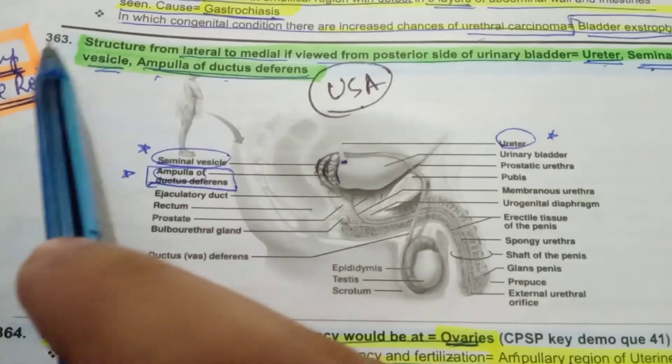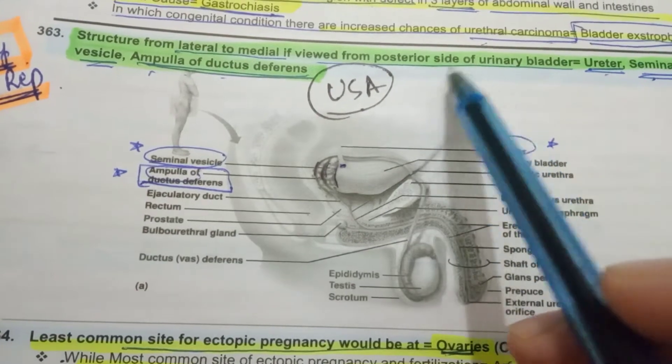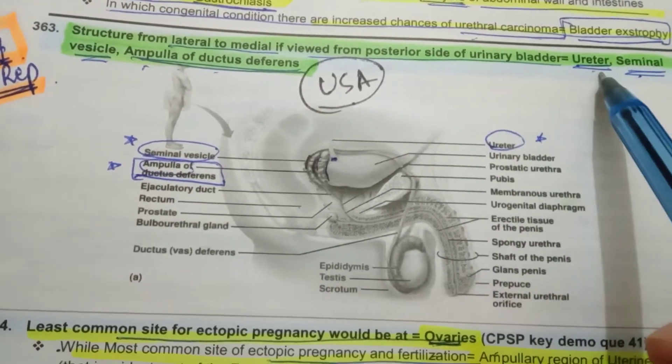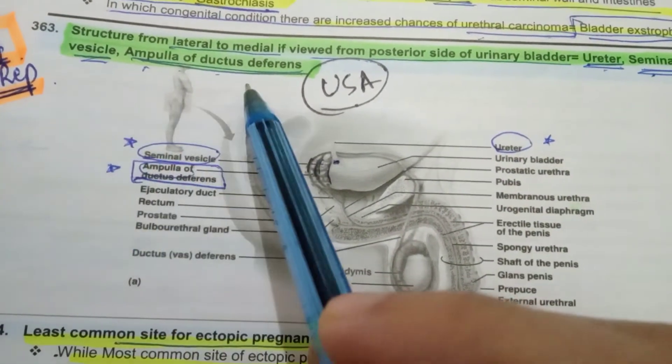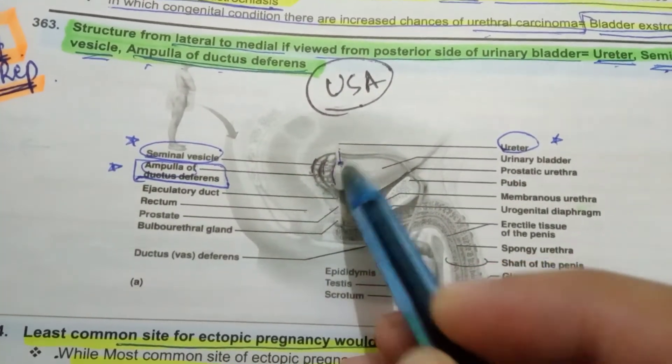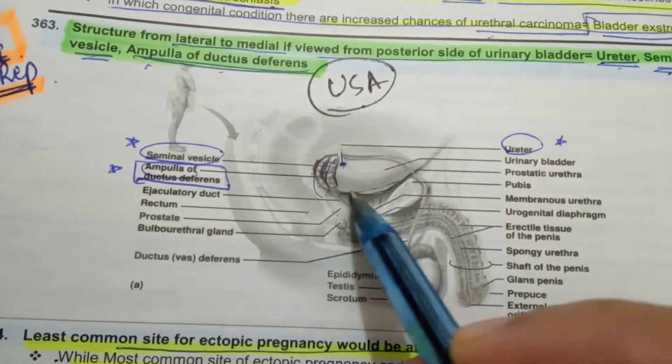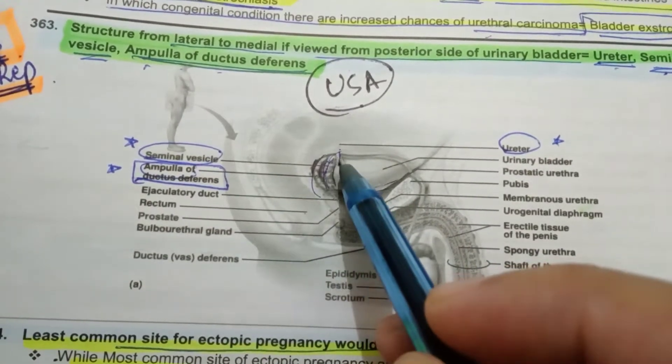Now coming to point 363: structures from lateral to medial if viewed from posterior side of urinary bladder - ureter, seminal vesicle, and ampulla of ductus deferens. This is the USA mnemonic. Ureter is this, this is seminal vesicle, and this is ductus deferens. And this is the posterior aspect of the bladder.